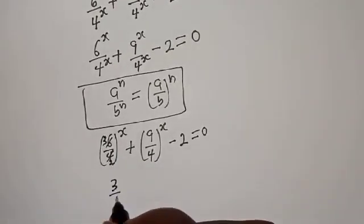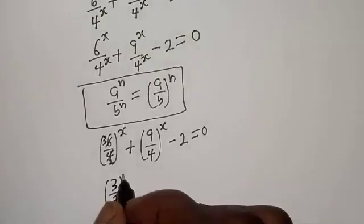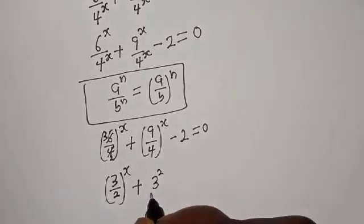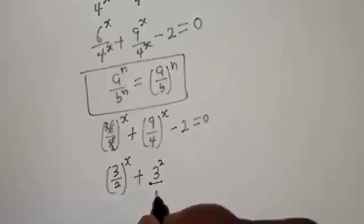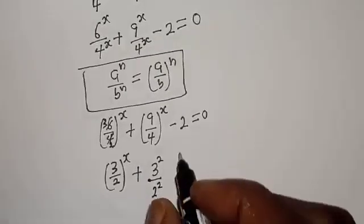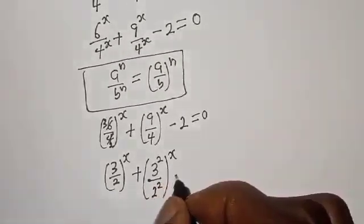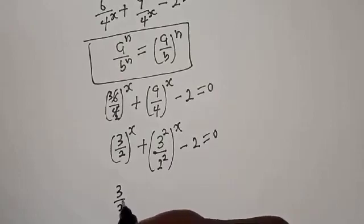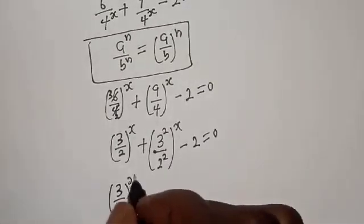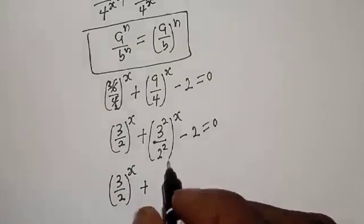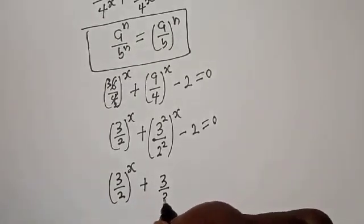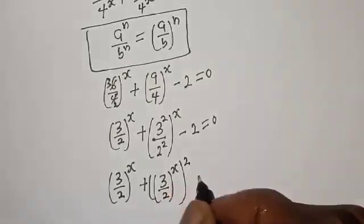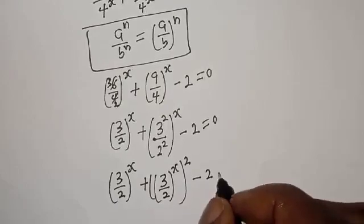So we have 3 over 2 raised to the power of s, plus 9 over 4 — which can be written as 3 squared over 2 squared — raised to the power of s, minus 2 equals 0. This simplifies to 3 over 2 raised to the power of s, plus 3 over 2 raised to the power of s, all squared, minus 2 equals 0.